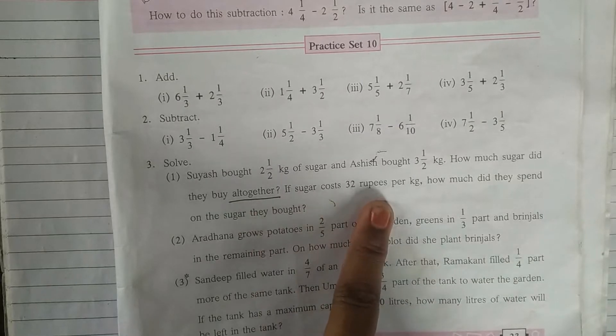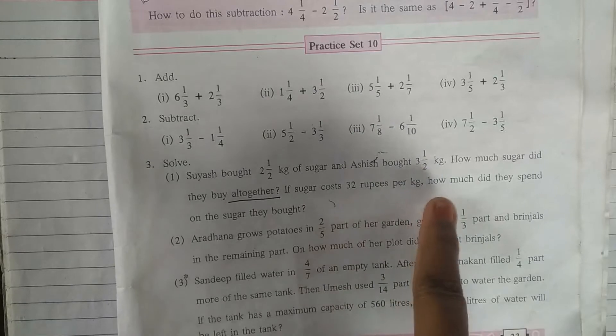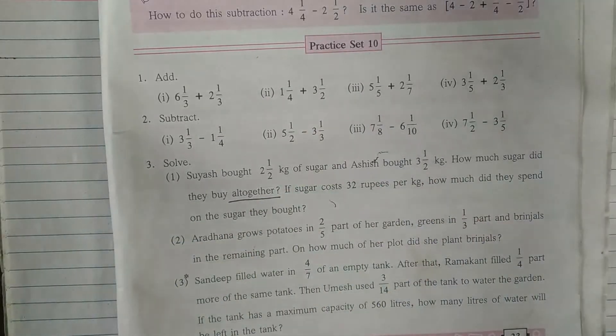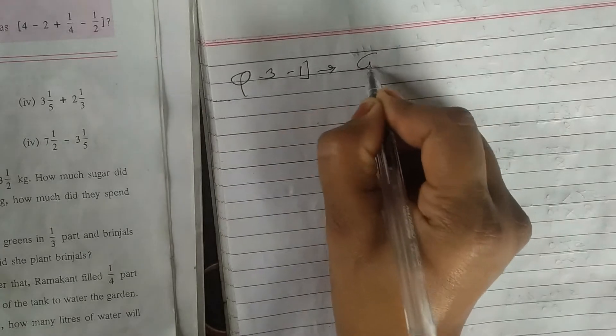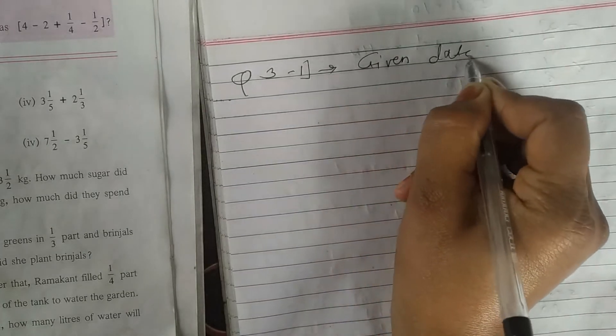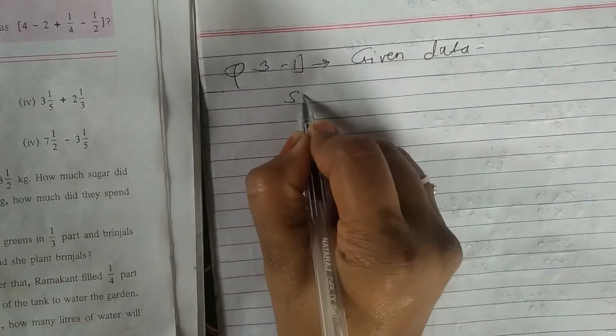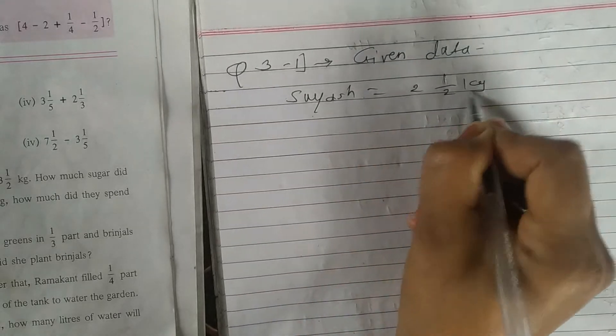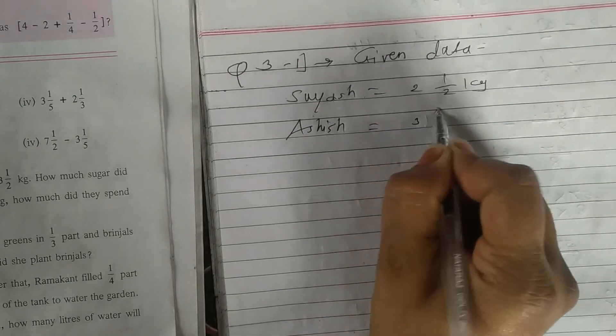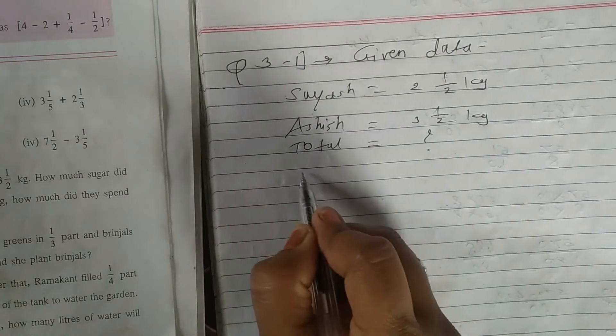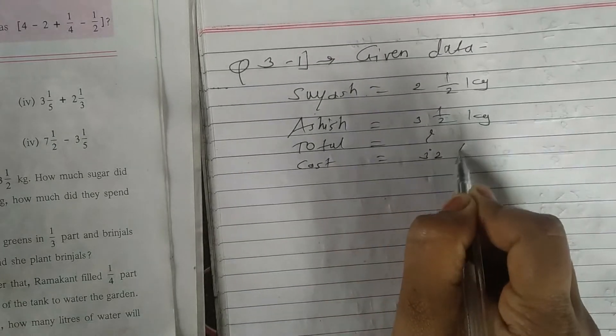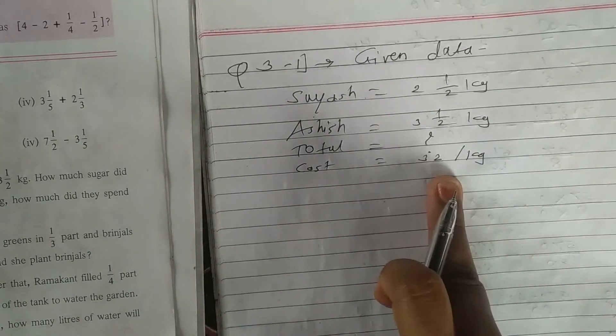If sugar cost is 32 rupees per kg, how much did they spend on sugar they brought? So I will write given data from problem. Question number three problem number first you write question also please from textbook. Suyash brought two and half kg sugar, Ashish three and half kg sugar, total sugar question mark. Cost 32 rupees per kg.